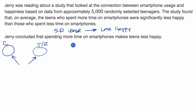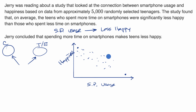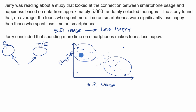What happened here was an observational study. In this study, we are looking at two variables: smartphone usage and teen happiness. They took 5,000 randomly selected teenagers and figured out their smartphone usage and their happiness, maybe with a survey. You could plot those 5,000 data points — a very happy teenager who doesn't use a smartphone much, or a not-so-happy teenager who uses a smartphone a lot. There's a trend, an association, that teenagers who use smartphones more seem to be less happy, and those who use them less seem to be more happy.